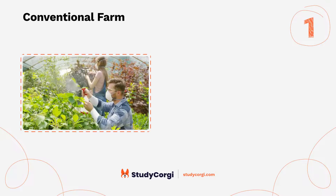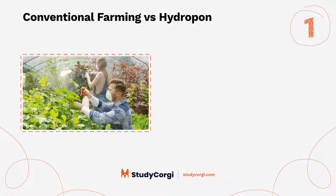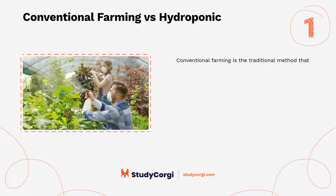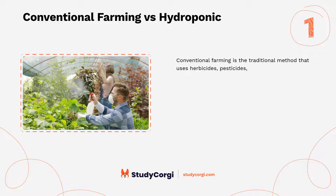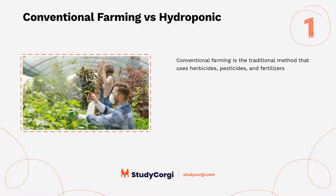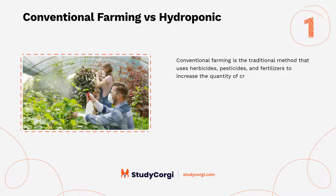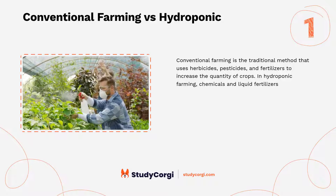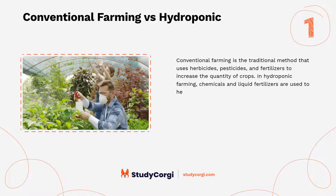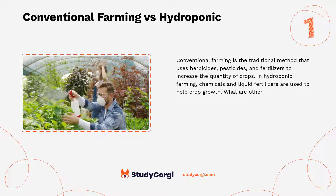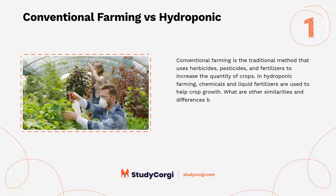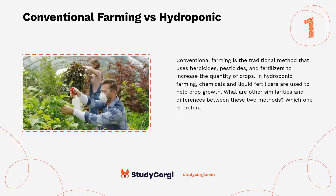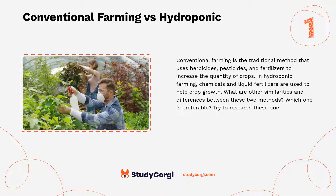Conventional farming versus hydroponic farming. Conventional farming is the traditional method that uses herbicides, pesticides, and fertilizers to increase the quantity of crops. In hydroponic farming, chemicals and liquid fertilizers are used to help crop growth. What are the similarities and differences between these two methods, and which one is preferable? Try to research these questions in your paper.